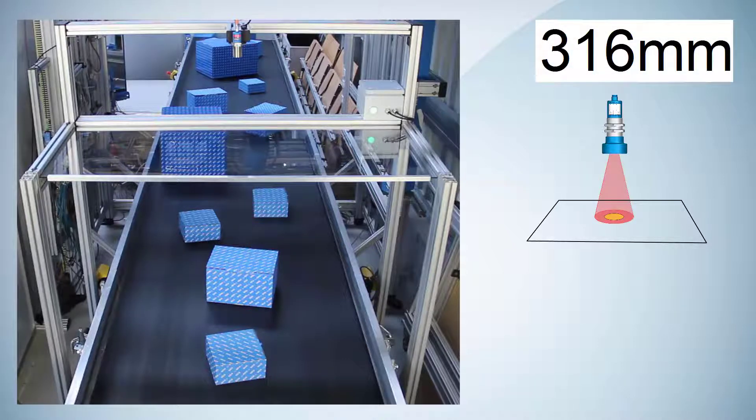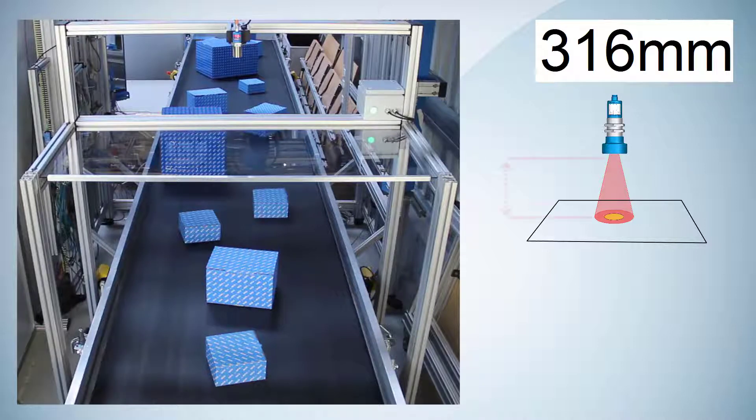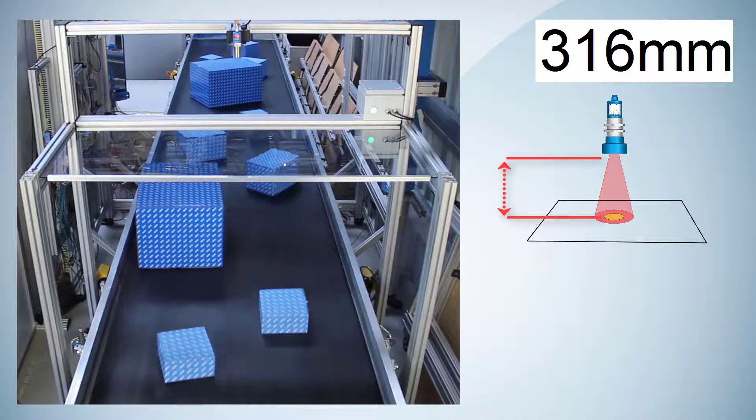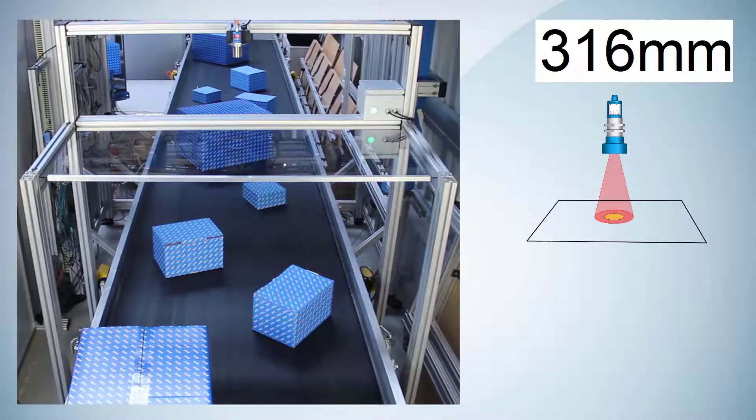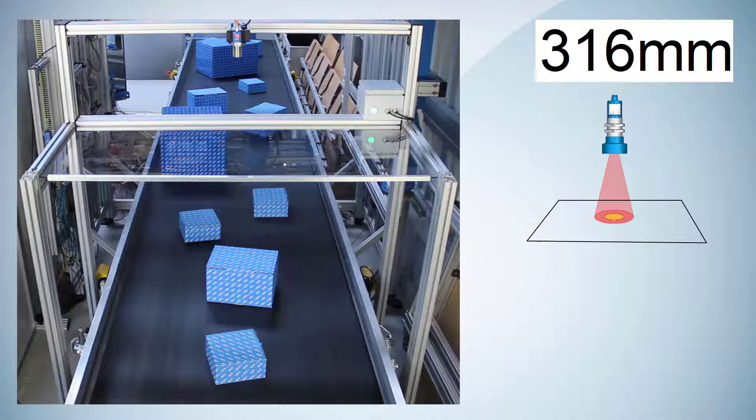When we start the sensor, the display shows a measurement value of 316 millimeters. This is the distance between the sensor and the acrylic glass. Currently in the default settings of the sensor, the sound cone is too wide to look through the hole in the glass.